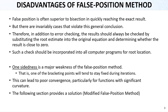False position is generally better than bisection in terms of converging quickly. However, there are some disadvantages, such as slower convergence in some cases, as shown in the previous slide. There are also other cases which violate the general conclusion of quickly reaching the exact result. For evaluating the result of the false position, we need some additional checks. In addition to error checking, the result should always be verified by substituting the root estimate into the original equation.